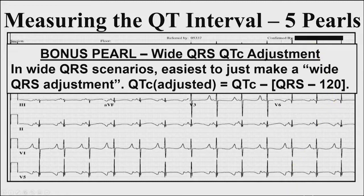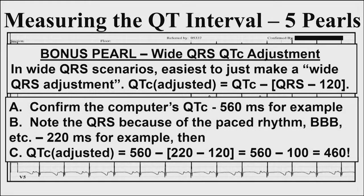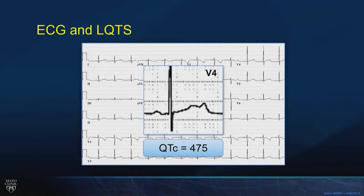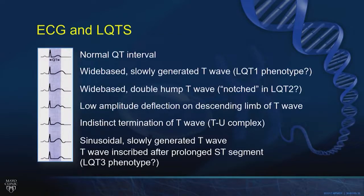For example: a QTc of 560 with a QRS of 220 milliseconds — after wide QRS correction, it's only 460 milliseconds. We must decide when the length of repolarization is wrong, but also the look. Broad-based T-waves suggest LQT1; humped, bumped, double-notched T-waves suggest LQT2; normal T-waves after a long ST segment suggest LQT3. It's not only the length of the QT interval, but the look of it. This genotype-ECG T-wave phenotype assessment helps guide diagnosis.